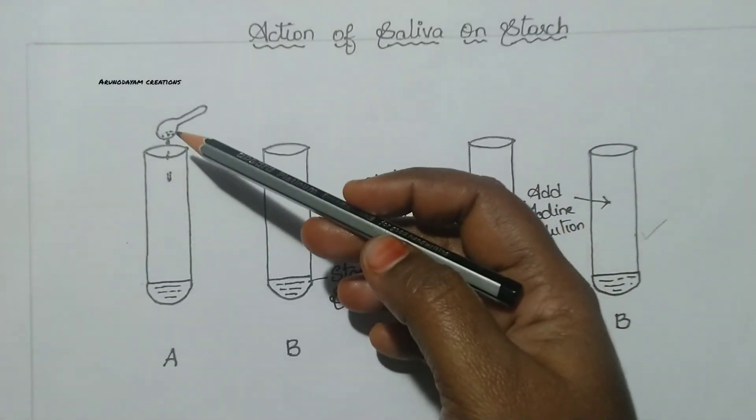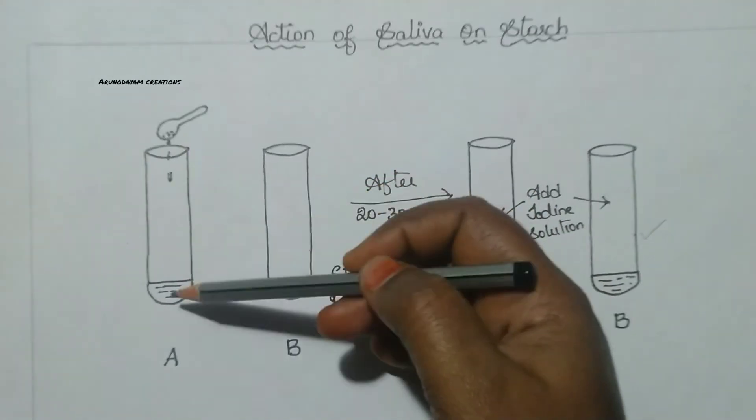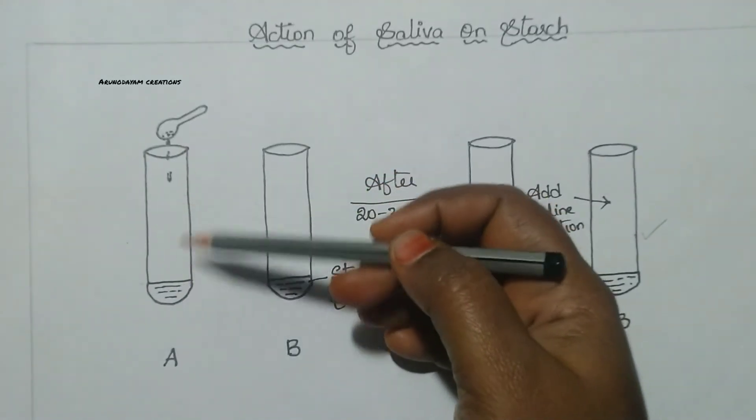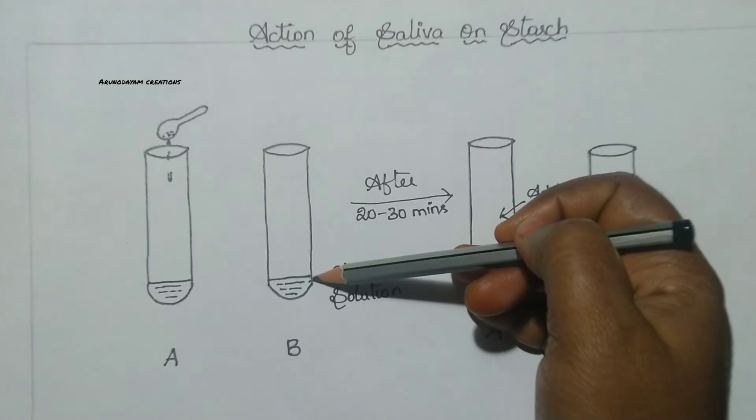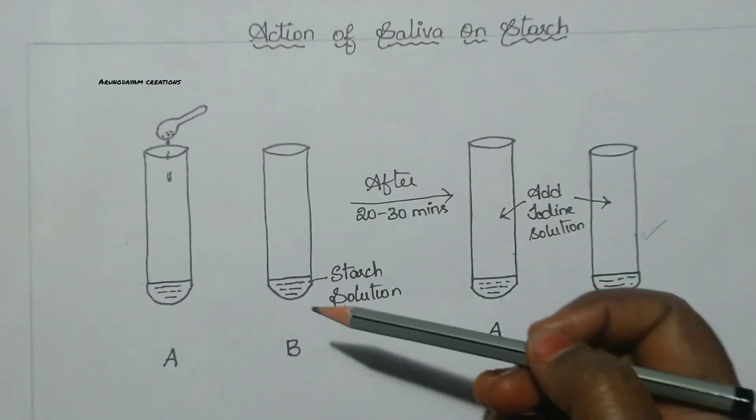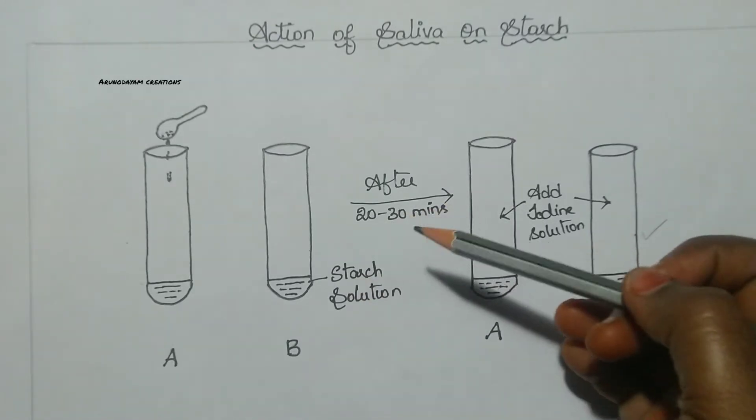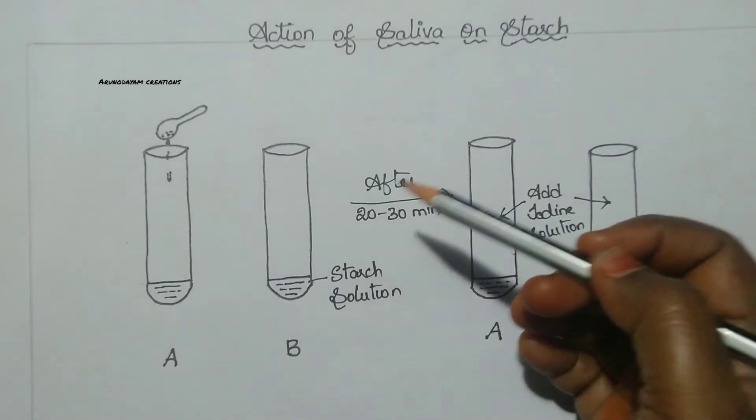Next, we have to take 1 ml of saliva which is collected from our mouth and add it to test tube A. We have to add saliva only to test tube A, not to test tube B. After adding saliva, we have to leave those two test tubes undisturbed for 20 to 30 minutes. So meanwhile some reactions will take place in these two test tubes.